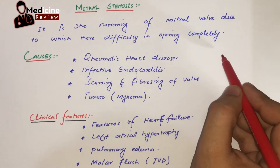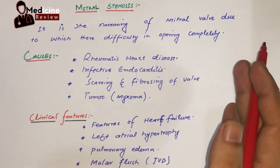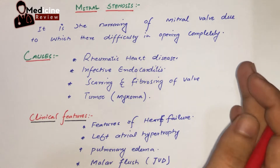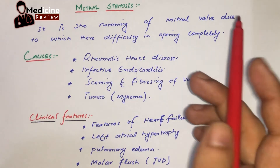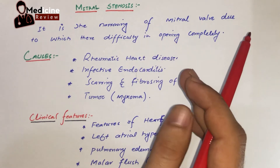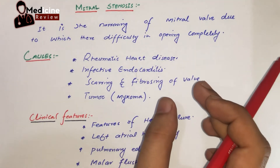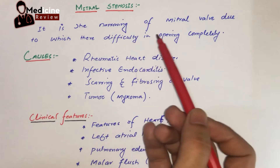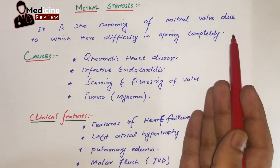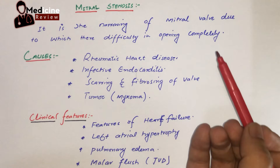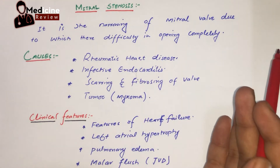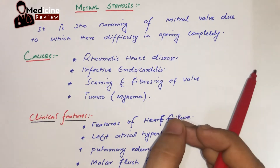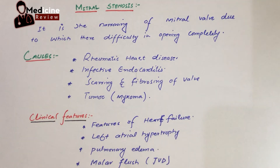The mitral valve is present on the left side of the heart, between the left atrium and the left ventricle. Mitral stenosis is the narrowing of the mitral valve, due to which there is difficulty in complete opening of the mitral valve, which leads to certain clinical symptoms.